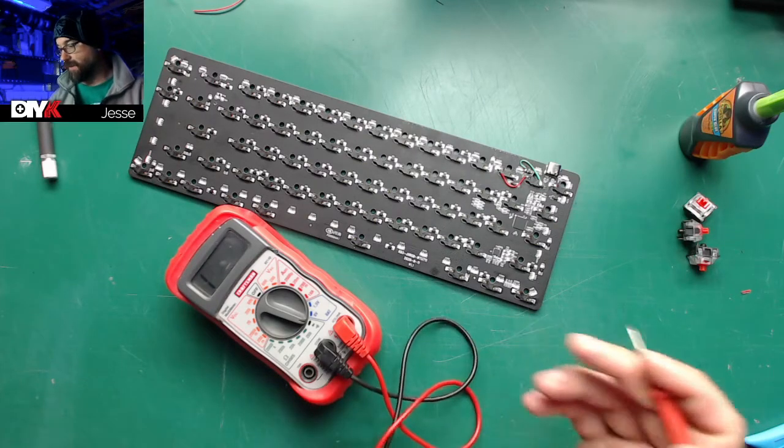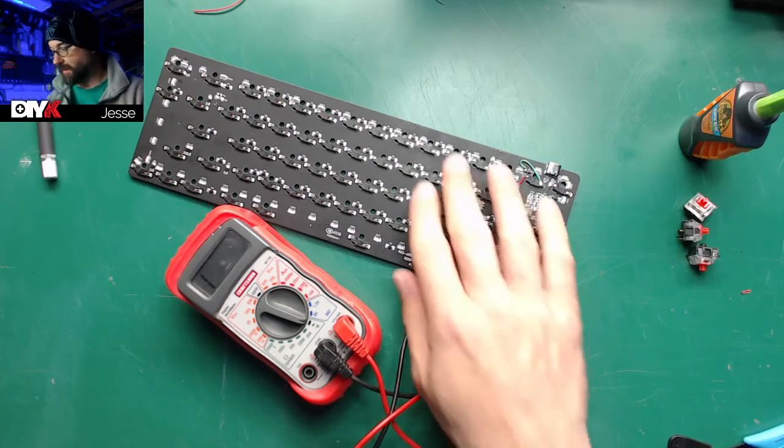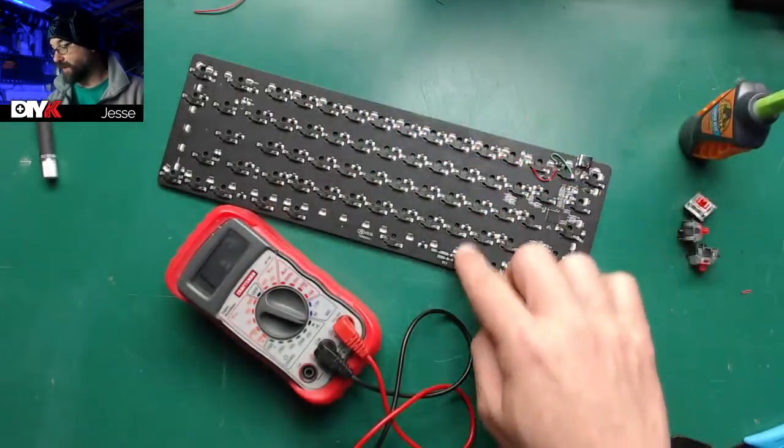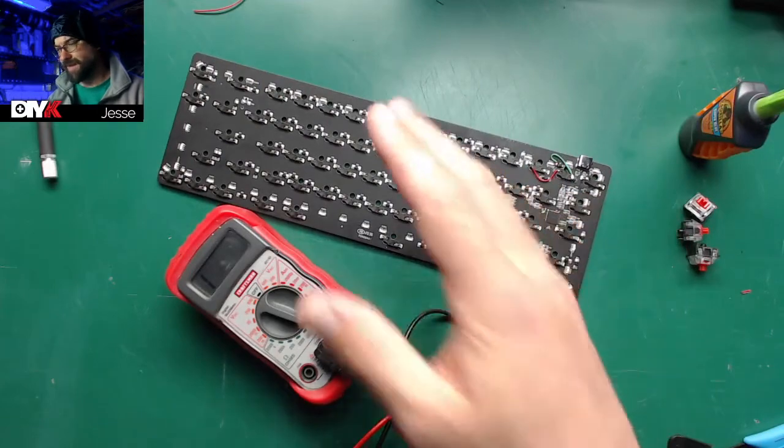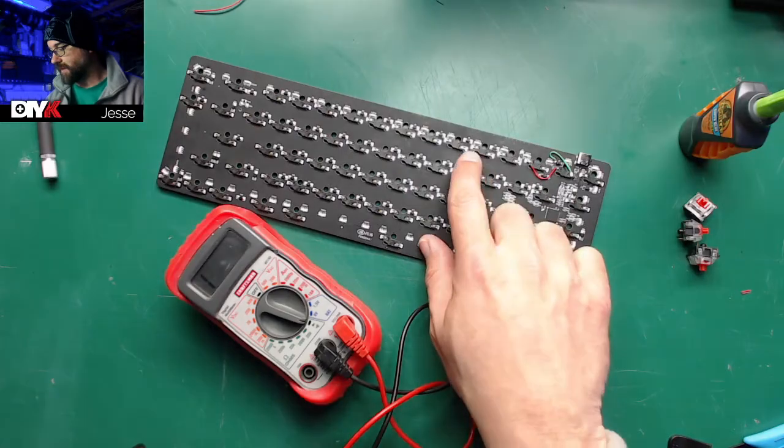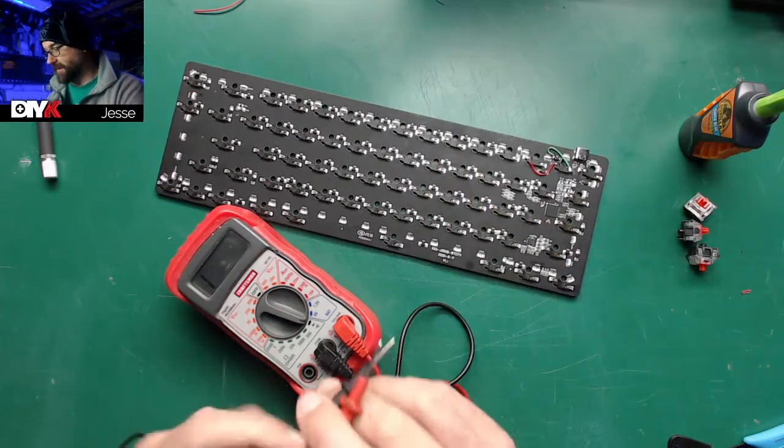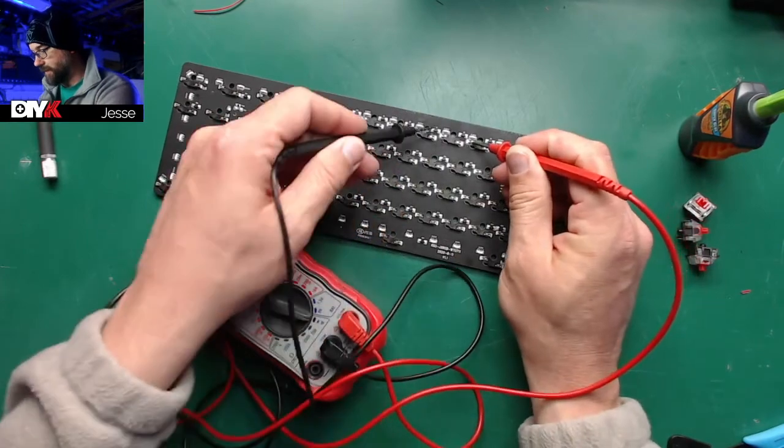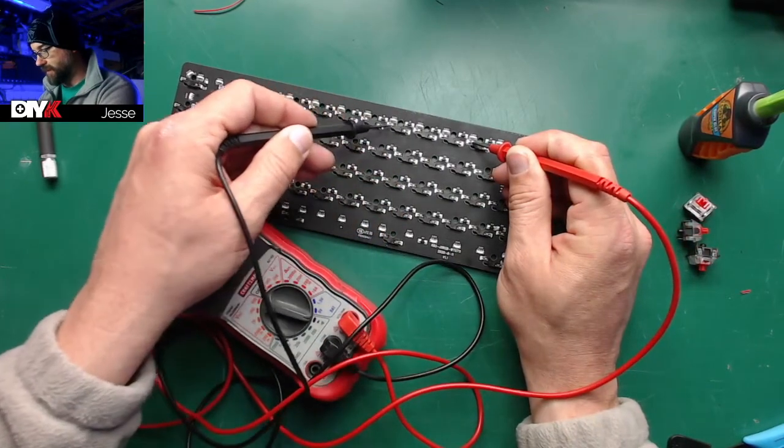What I found after looking at this board is the row connection actually goes, the diodes are on the columns. A lot of times it's the opposite on enthusiast keyboards, but in this case the way it's laid out...